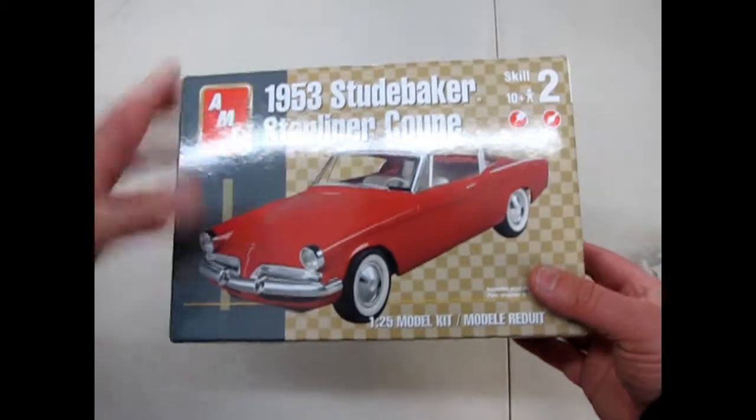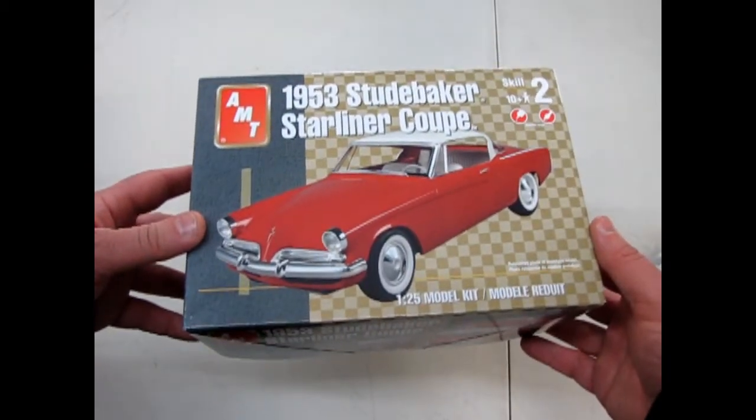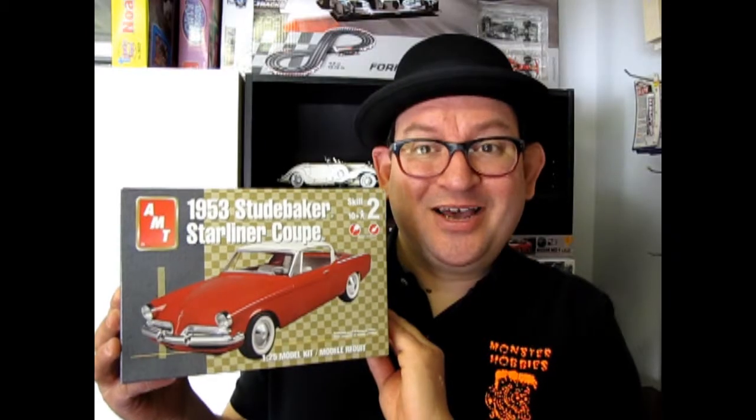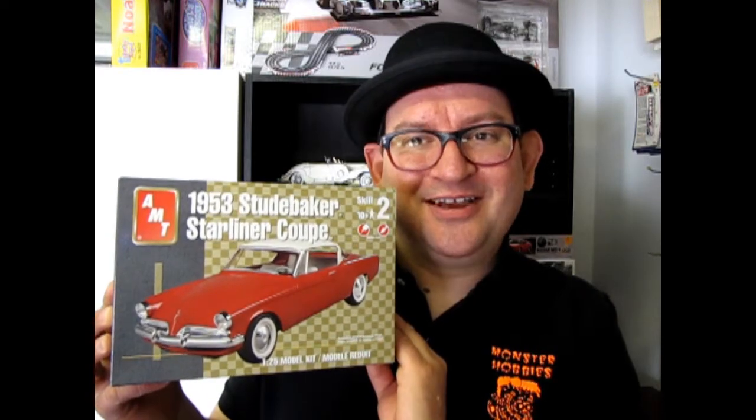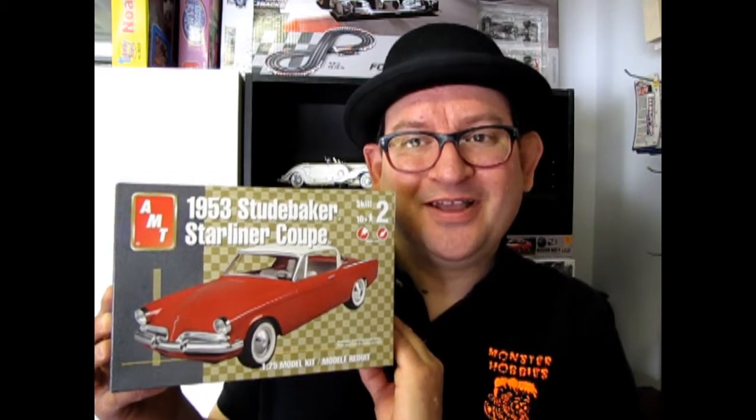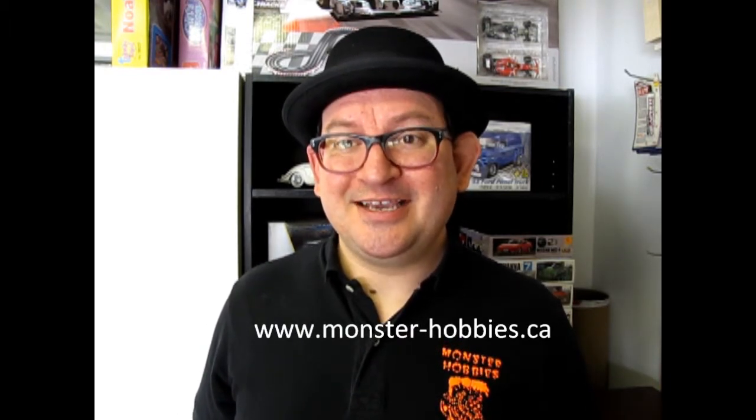And that concludes our look at the 1953 Studebaker Starliner Coupe by AMT Ertl. And if you would like to check out other videos in this series, please check here, here and here. And don't forget to like and subscribe to us right down here. And check out our website www.monster-hobbies.ca for more model car fun. Until next time, have a good one.